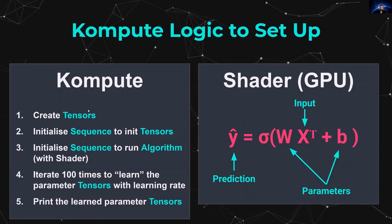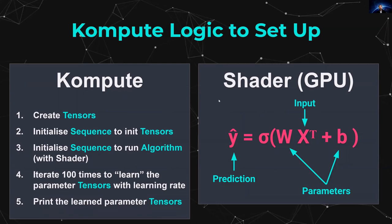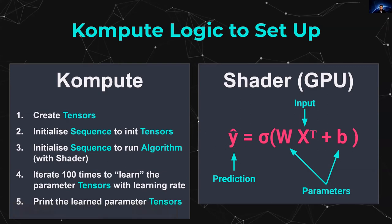We'll need to create tensors representing our input data, parameters, predictions, and training data. We'll initialize those tensors on a sequence, initialize the algorithm, record the operations, and then iterate and let the machine learn. We run multiple iterations through the dataset, updating the parameters every time, running micro-batches that execute in parallel on the GPU. After 100 iterations, we will have learned the parameters.